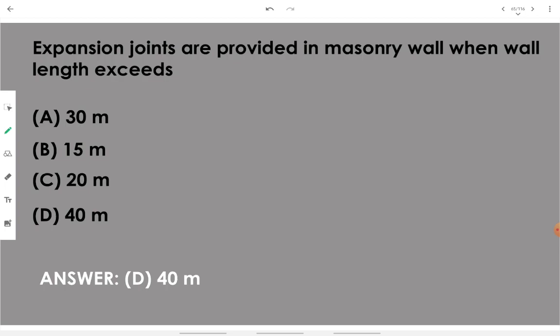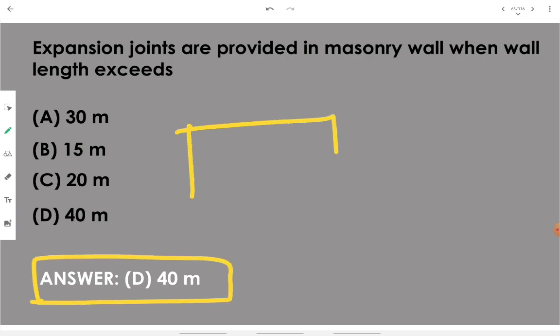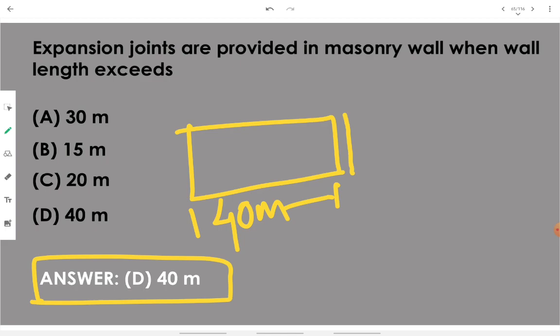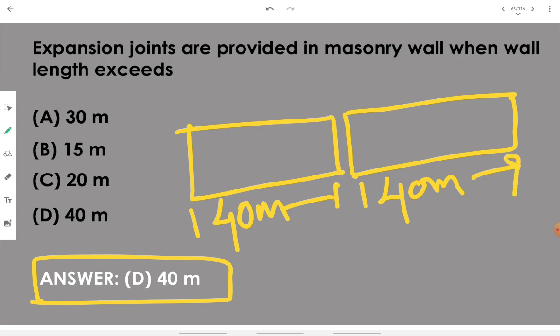Expansion joints are provided in masonry walls when wall length exceeds 40 meters. For example, once the wall's length has reached 40 meters, an expansion joint is provided and then construction of the next wall section is continued.